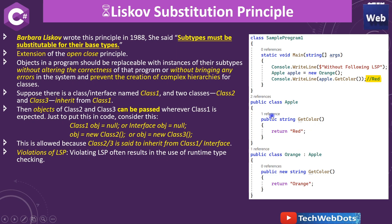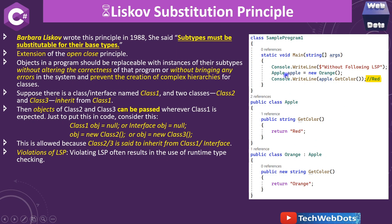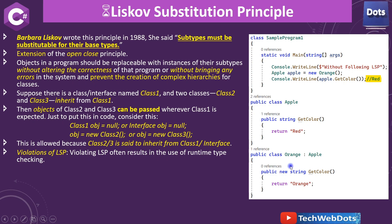We are creating one more class called Orange, whose base class is Apple — it inherits from Apple — and here we are giving a new definition of GetColor using the 'new' keyword. When we create an instance of Orange and assign this orange object to an Apple object reference variable, this is what the principle says: the subtype (Orange) must be substitutable for its base type (Apple). But at runtime we get no error, yet the result returns red instead of orange.